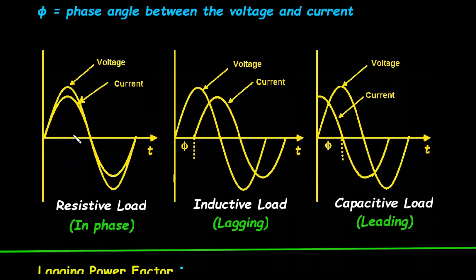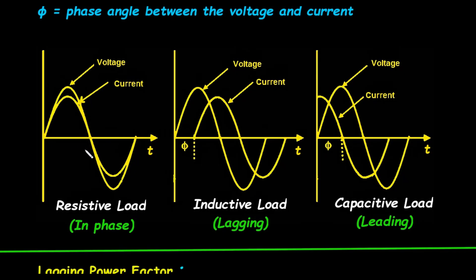We can visualize this with three graphs. Each graph plots voltage and current against time. First, let's consider a purely resistive load. In this case, the voltage and current waveforms are perfectly aligned. They rise and fall together, reaching their peaks and crossing the zero line at the exact same time. We say that the voltage and current are in phase. For a resistive load, the phase angle Φ is zero.